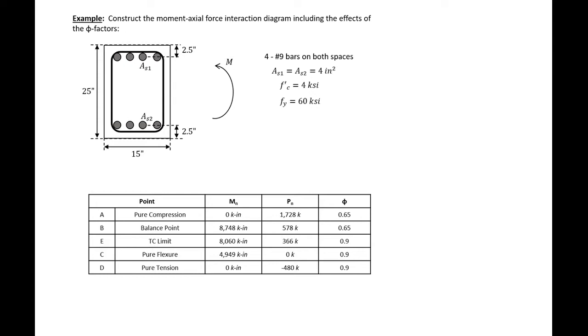This video is a continuation of a previous problem in which we found several points: the pure compression point, the balance point, the tension controlled limit, pure flexure point, and pure tension point. These were all for our rectangular section with a height of 25 inches and width of 15 inches. It's a symmetrical column as well.